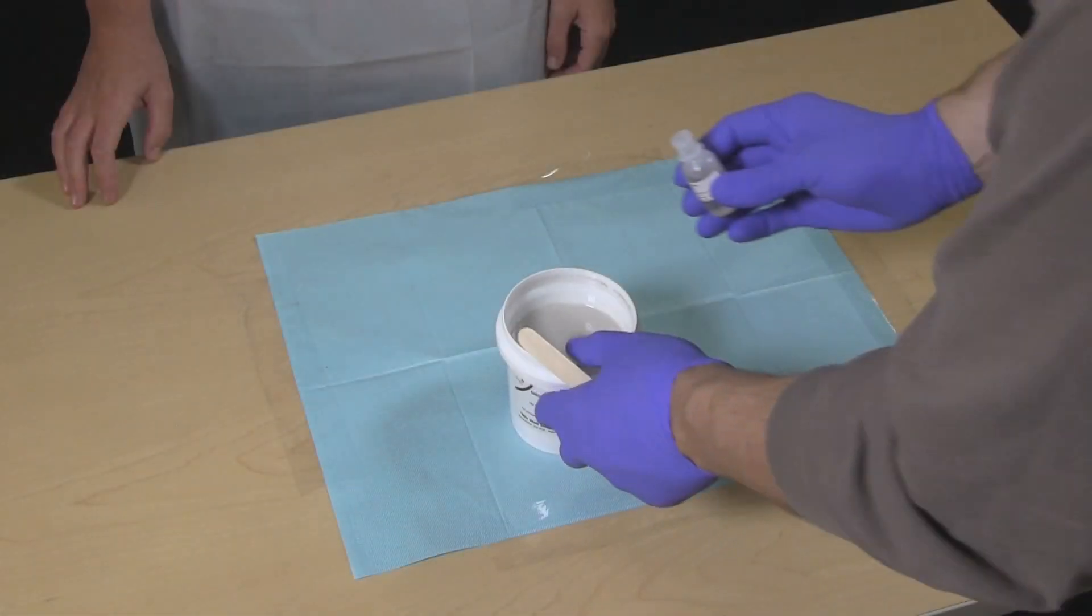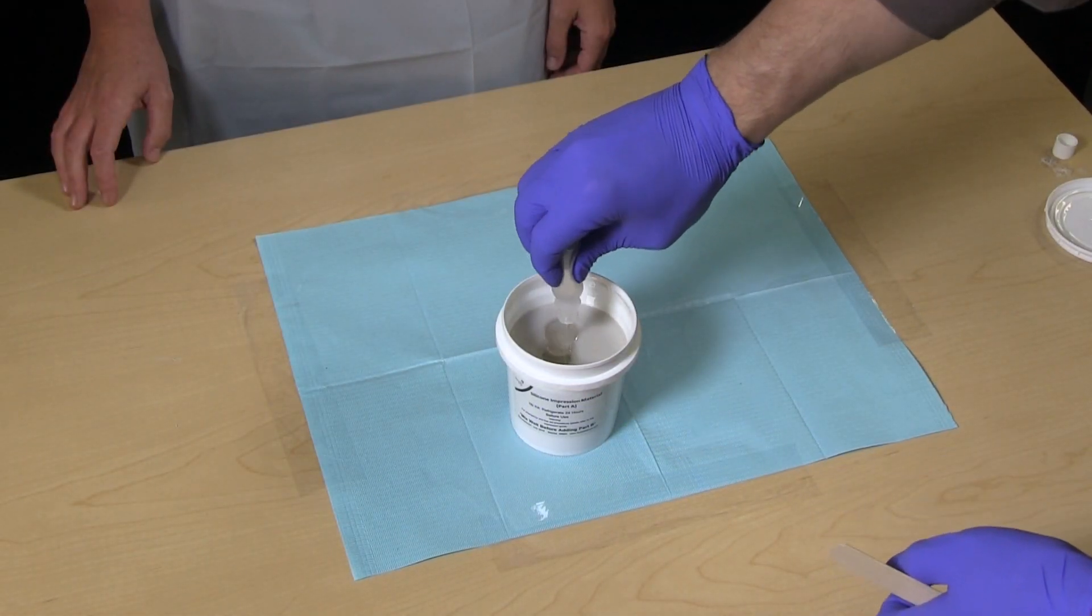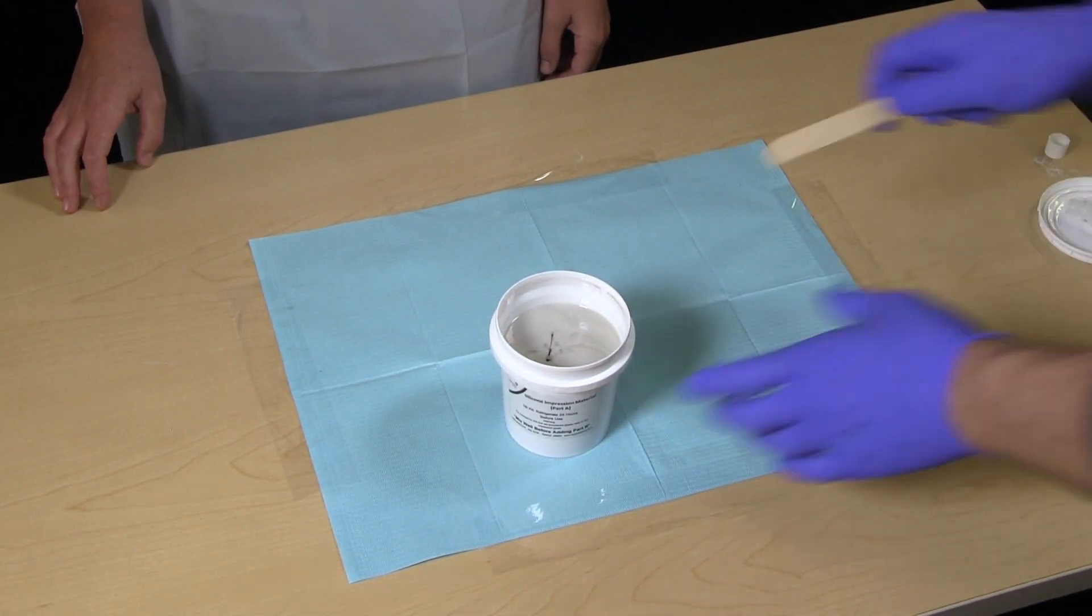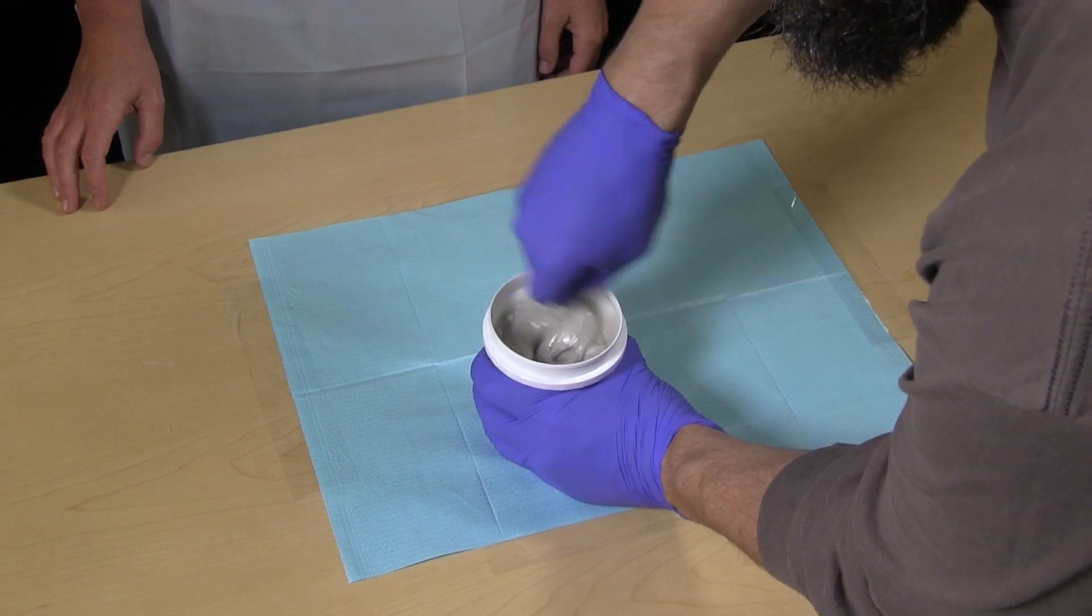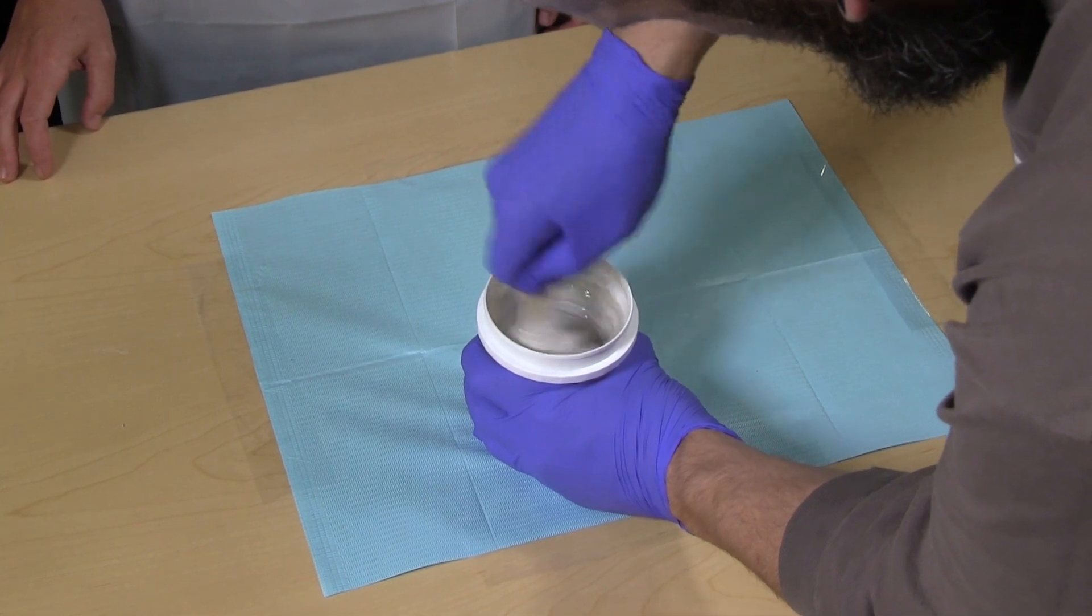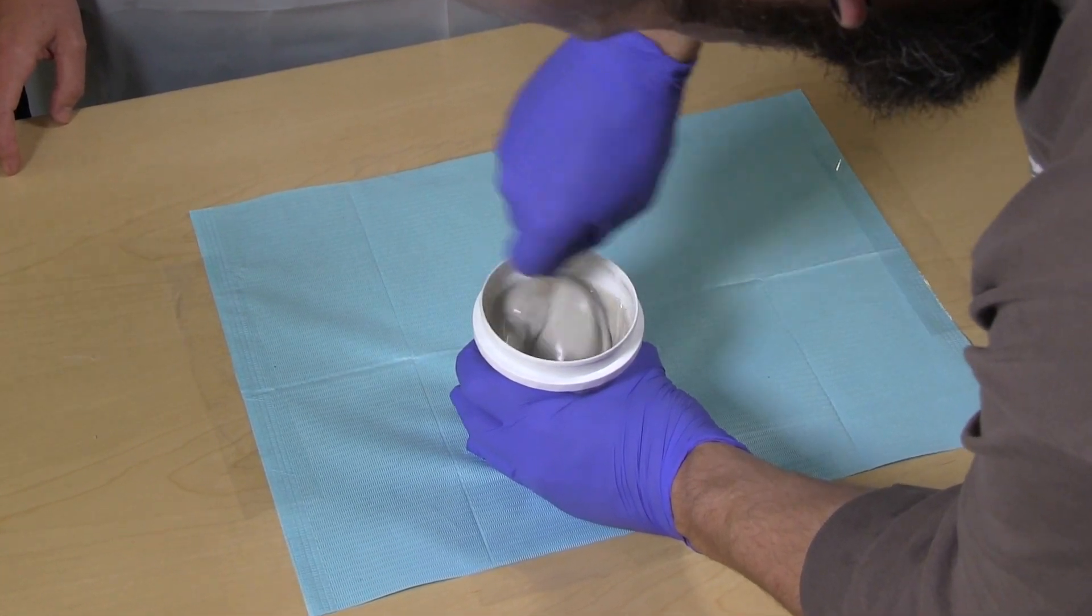Add one bottle of catalyst to one container of impression material and stir thoroughly. An uneven mix can result in uncured material. The work time is approximately 3 to 5 minutes. In warmer temperatures, this time will be reduced. Impression material should be refrigerated to increase work time.